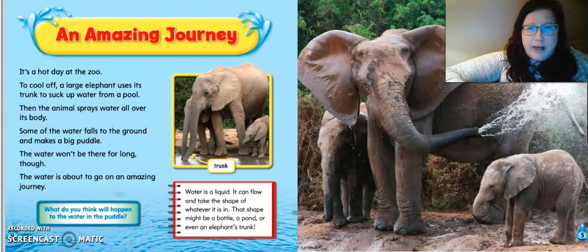What do you think will happen to the puddle? Water is a liquid. It can flow and take the shape of whatever it is in. That shape might be a bottle, a pond, or even an elephant's trunk. We learned that in our matter unit. Let's go on and see what is going to happen to this puddle. See if your prediction's right.